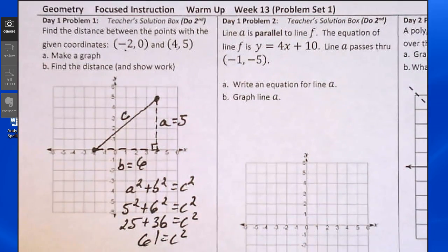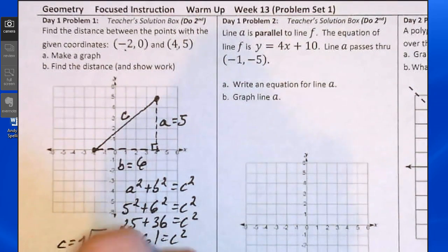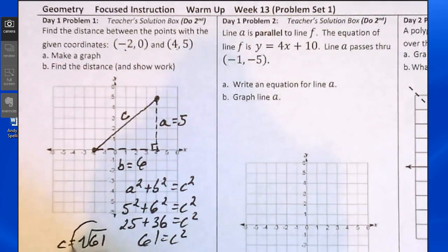Then take the square root of both sides to get an answer for c. So c equals the square root of 61, and that's the distance that we were asked to figure out.